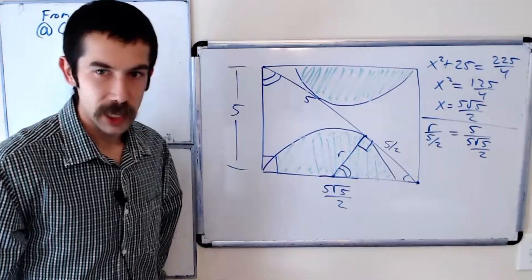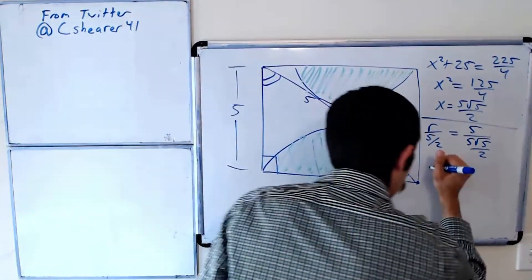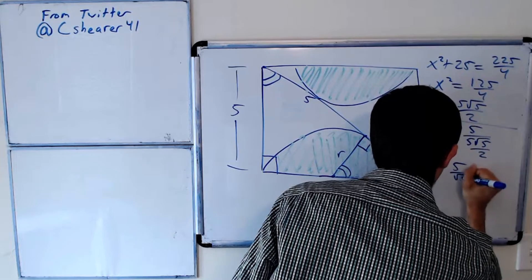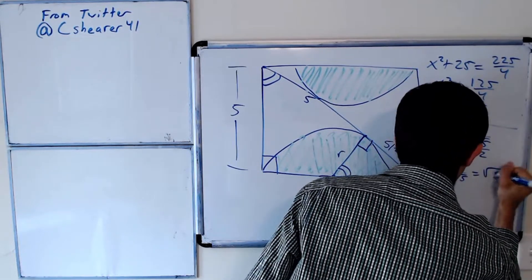So, multiply both sides by 5 halves, and we get r is equal to 5 over root 5, which is equal to root 5.